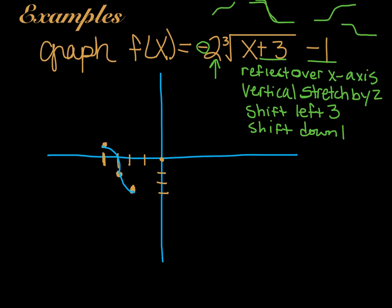And then remember we need 5 points. So I need to know, I need to put the x in that's going to make this 8. That would be 5. 5 plus 3 is 8. The cube root of 8 is 2. 2 times negative 2 is negative 4. Negative 4 minus 1 is negative 5. And then I also need what would make it negative 8, and that's going to have to be negative 11. Negative 11 plus 3 is negative 8. The cube root of negative 8 is negative 2, times negative 2 is 4, minus 1 is 3. So now we have the same thing as our parent function, only it's reflected over the x axis, it's stretched vertically by 2, shifted left 3, and down 1.